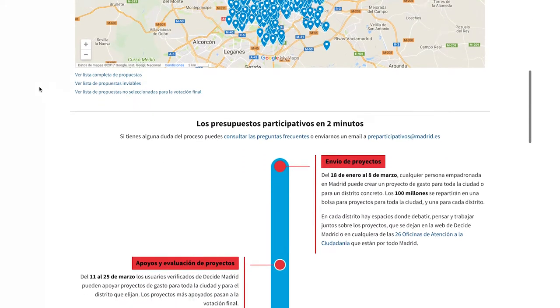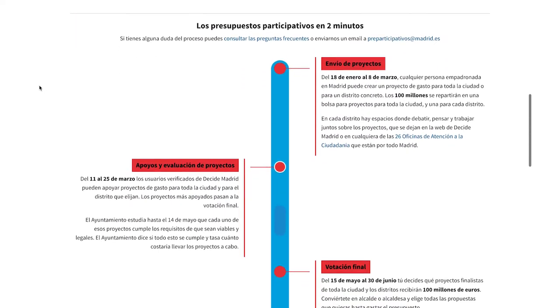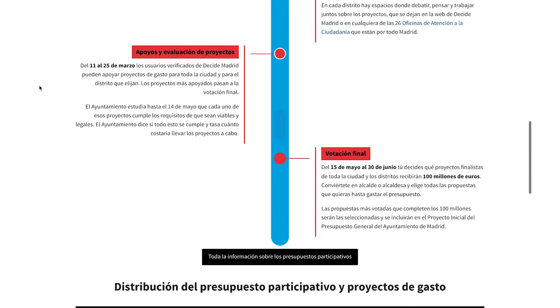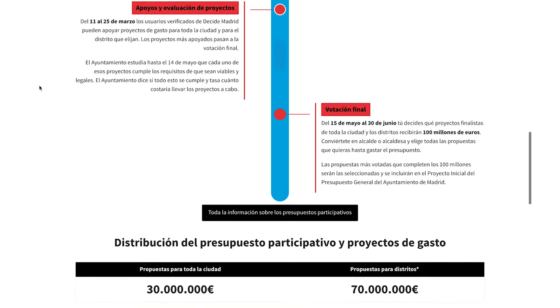Participatory budgets are divided into three main phases: creation of proposals, citizen support and evaluation of proposals, and final vote.